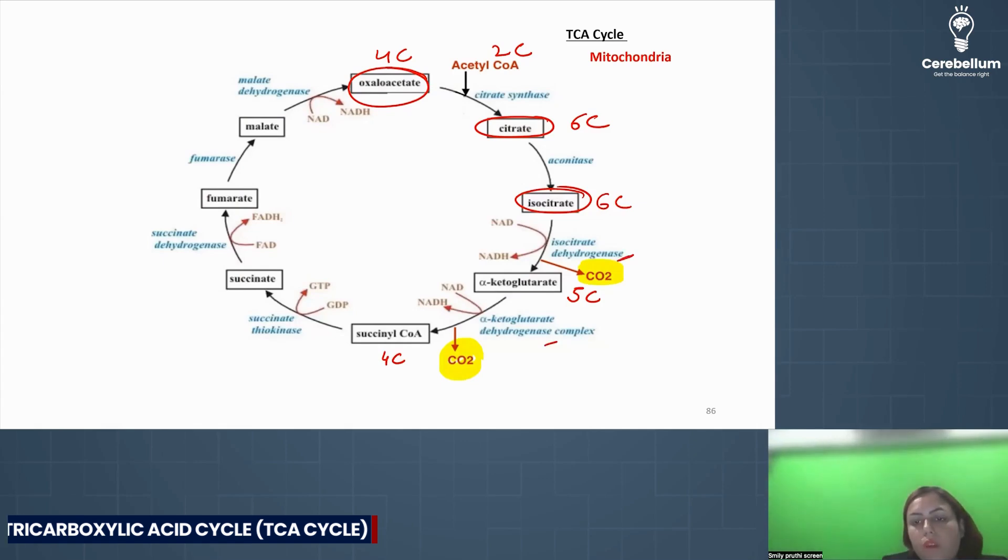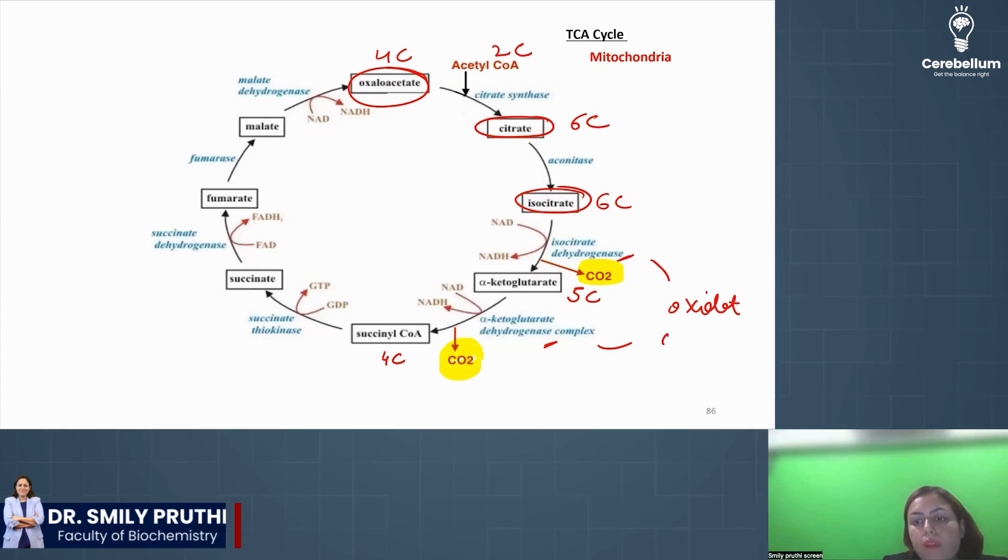Both are dehydrogenases. So both steps are like link reaction. Oxidative decarboxylation. Very, very important. So we have 2 steps of oxidative decarboxylation. 2 steps of oxidative decarboxylation in TCA. Same like link reaction. Dehydrogenase is the enzyme. Carbon dioxide removed. NADH formed.